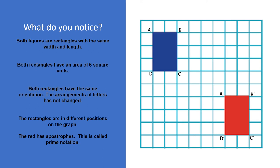You may have noticed that both rectangles have the same orientation — meaning the arrangement of the letters has not changed. If I go clockwise, both rectangles go A, B, C, D. You may have noticed they're in different locations on the graph. And the red graph has apostrophes — this is called prime notation: A prime, B prime, C prime, and D prime. Connecting back to our vocabulary, the first shape is our pre-image and the prime notation indicates the second is our image, because it happened after we moved the first shape.